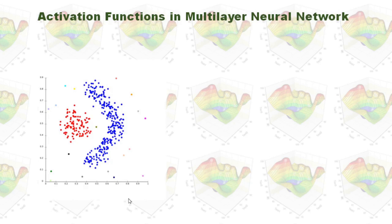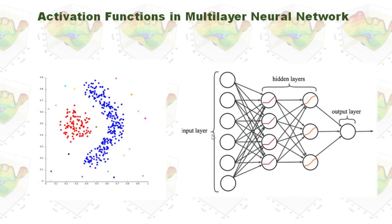Now let's try to separate different data points into different data clusters. You can see there are two major data clusters — the blue one and the red one. To simplify this problem, let's just ignore those minor groups. Clearly, if you want to draw a line to separate those two clusters, you cannot draw a straight line. In this case, we can use a multilayer neural network like this. We have our input layer and our output layer, and in between we can have two or more hidden layers. In those hidden layers, we can have different activation functions.